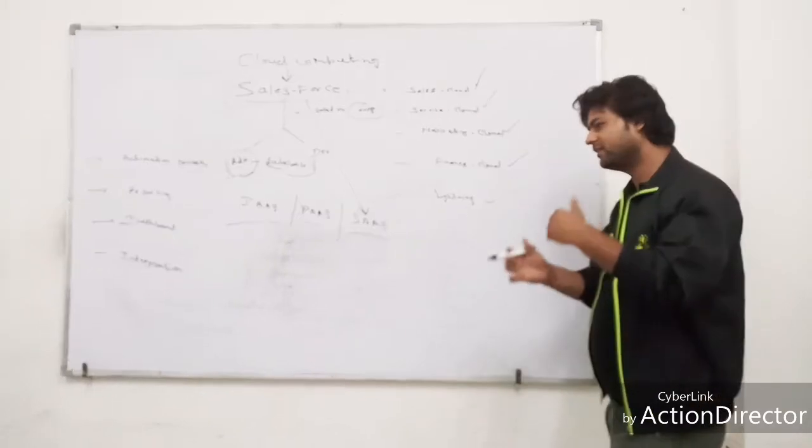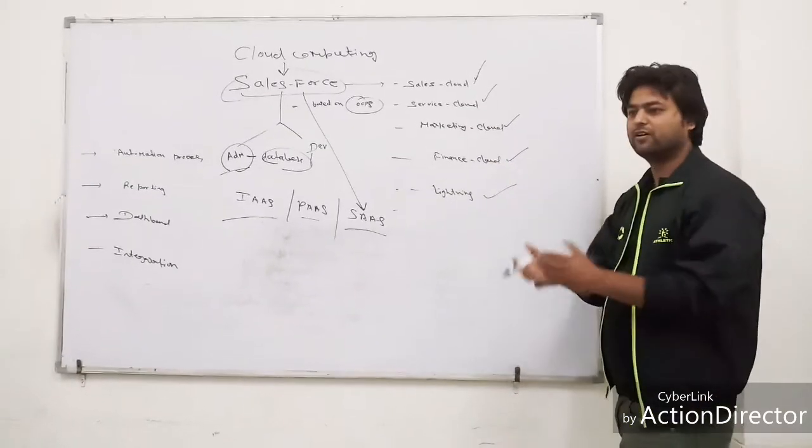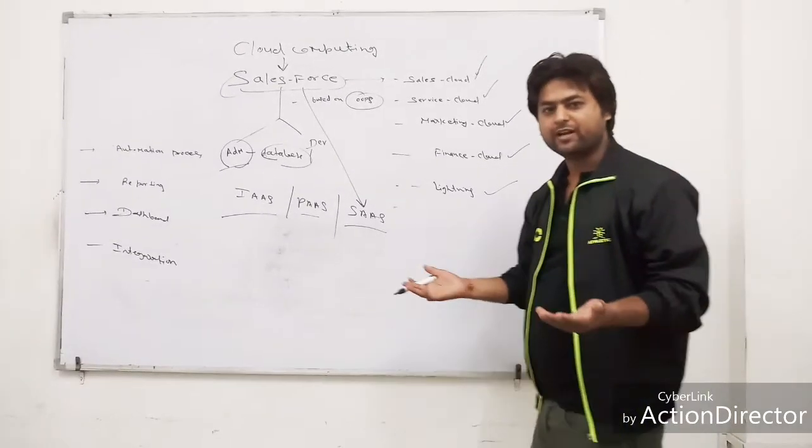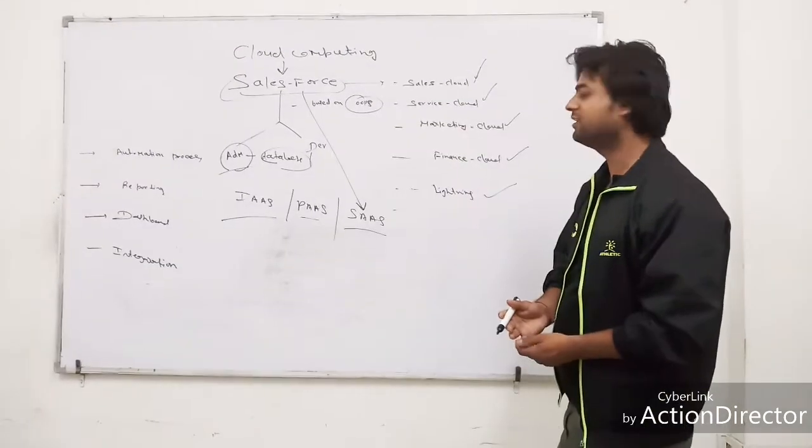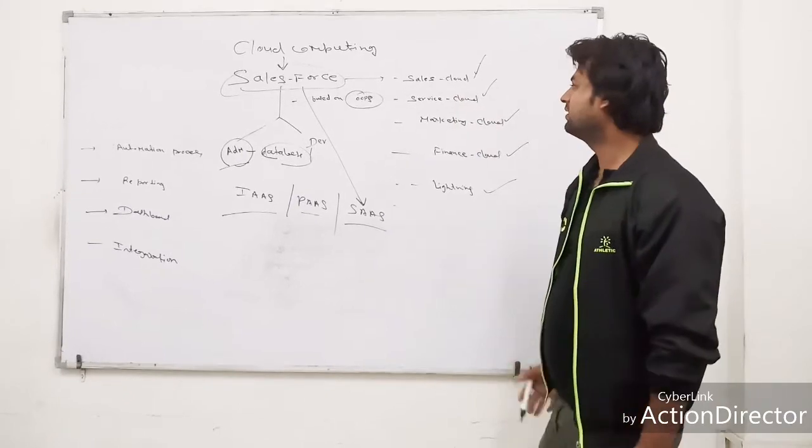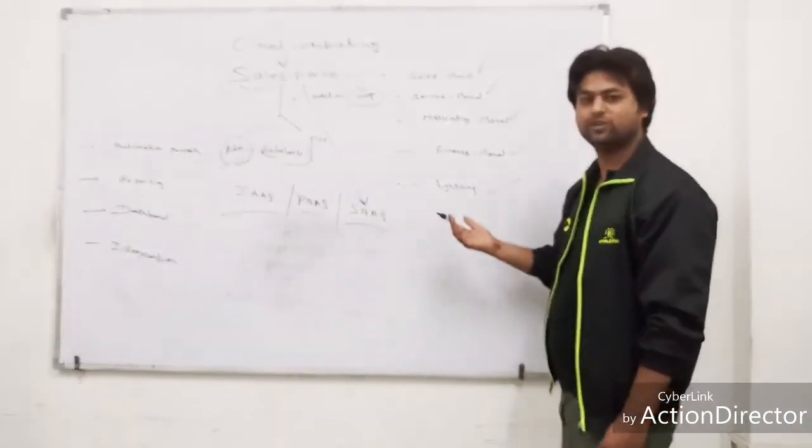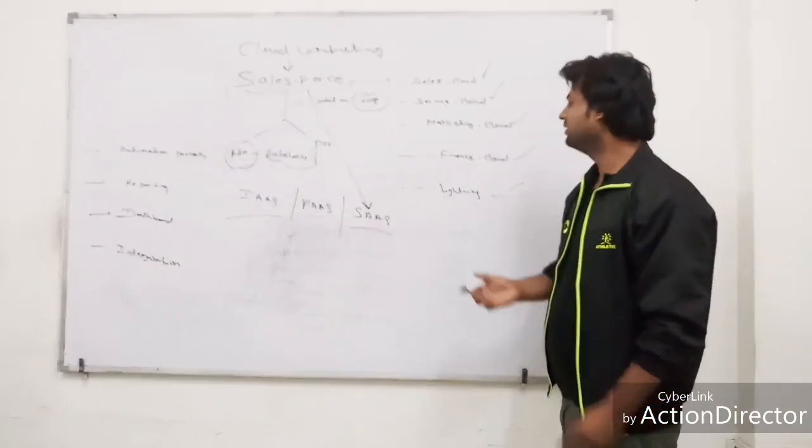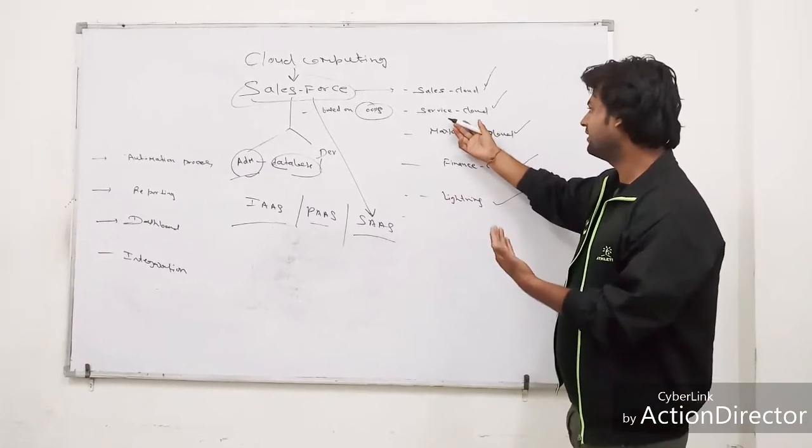When we work in the sales cloud, some objects come under it like account, lead, opportunity, and campaign. Different objects like knowledge base and solution come in the service cloud. Similar is the marketing cloud and service.